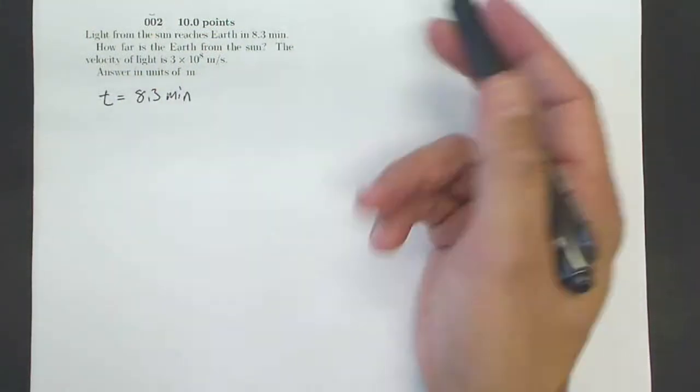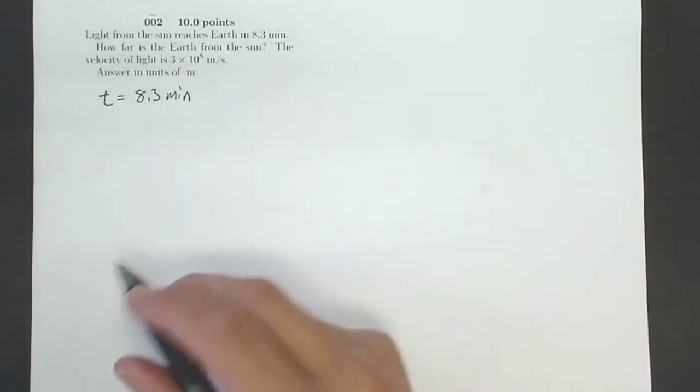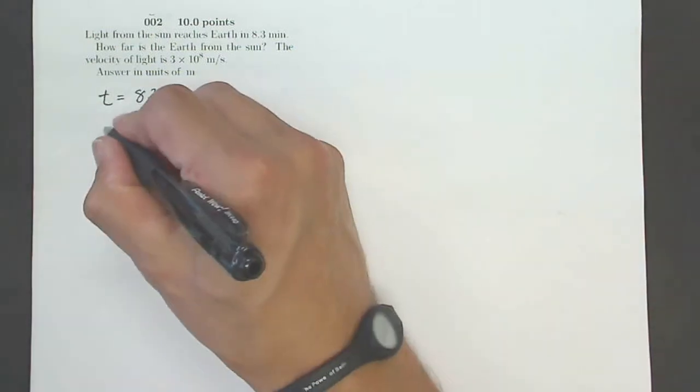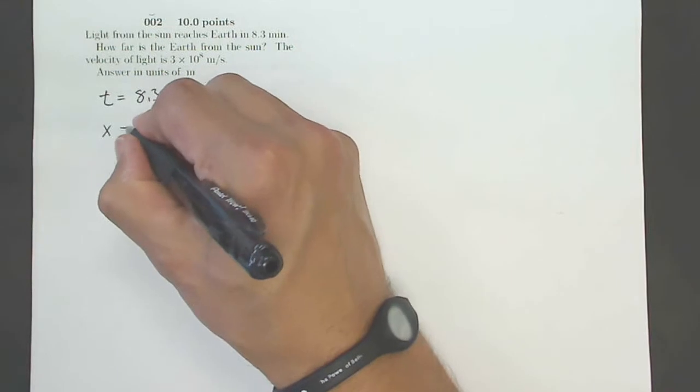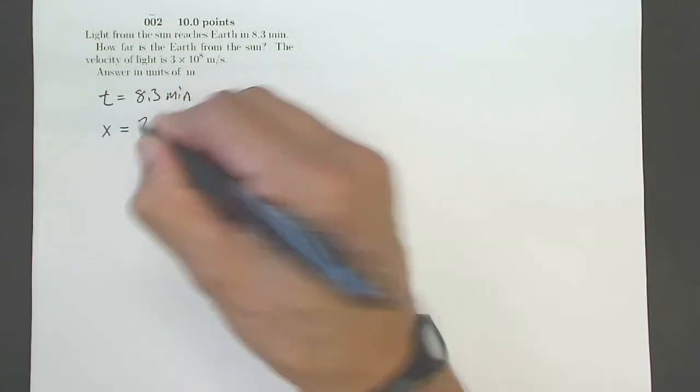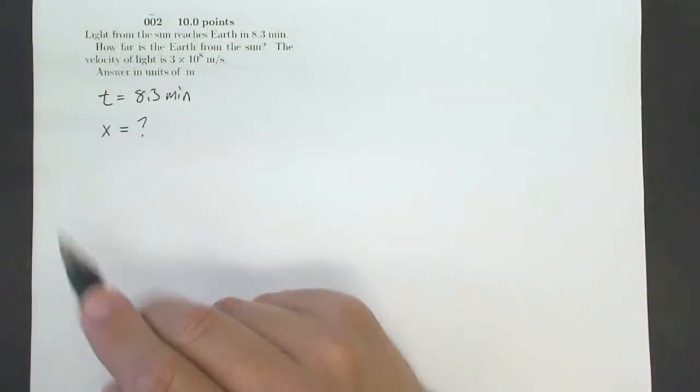How far is the earth from the sun? What am I looking for? How far? That is a distance or a displacement. The variable that we use for distance or displacement is x. So x is question mark. I'm going to write it that way just so that I remember what I'm looking for.